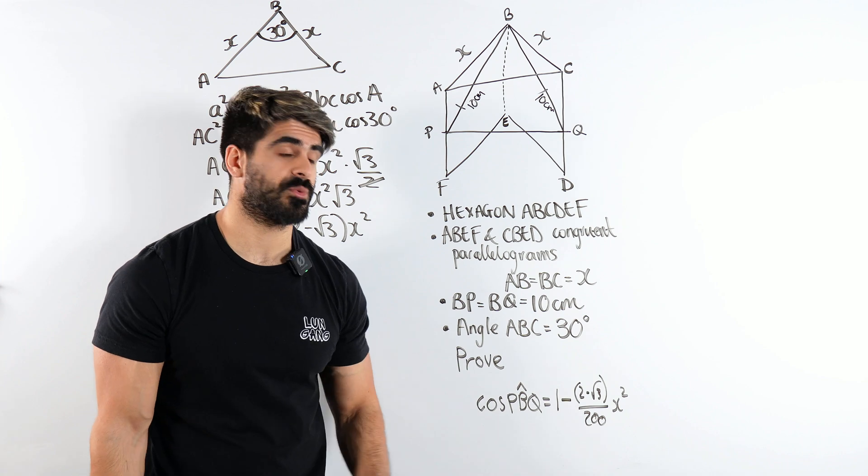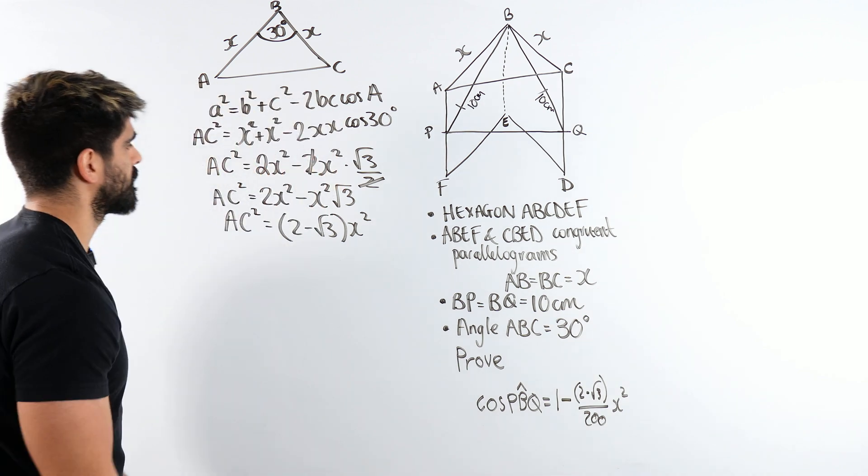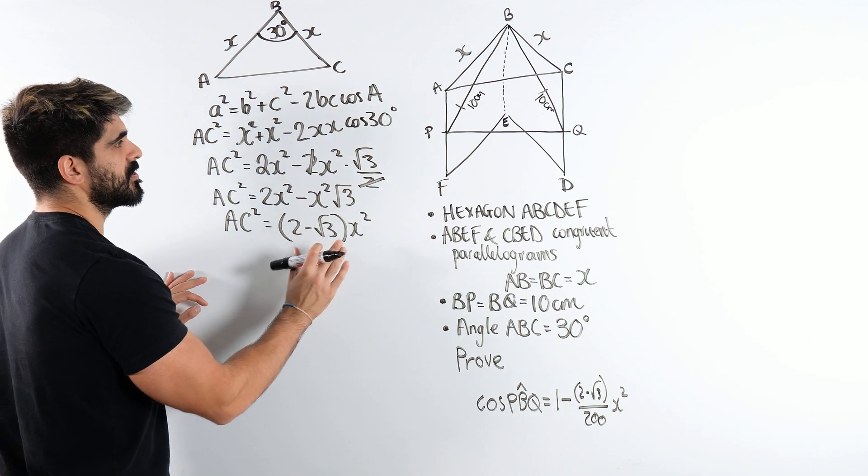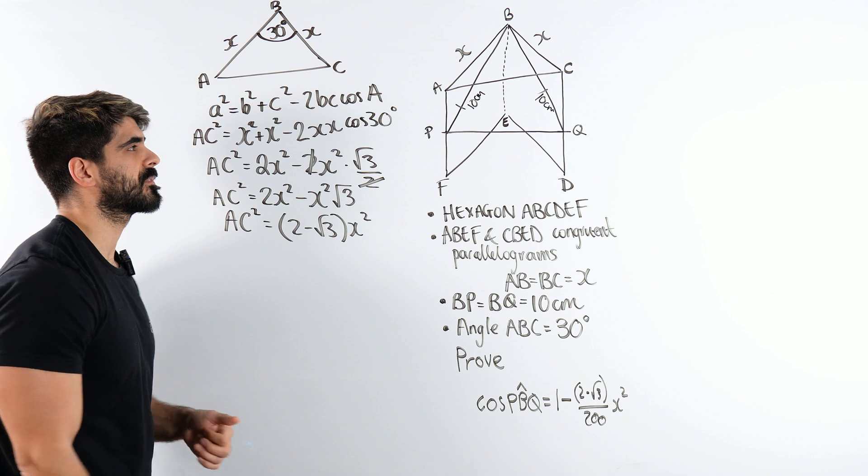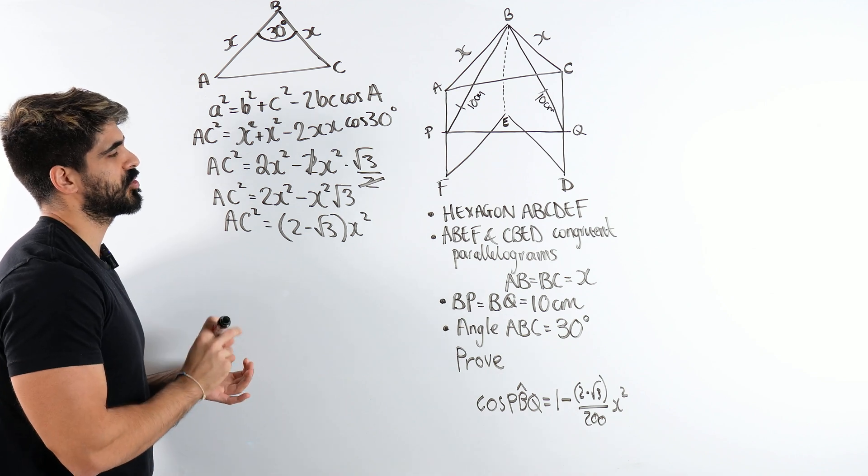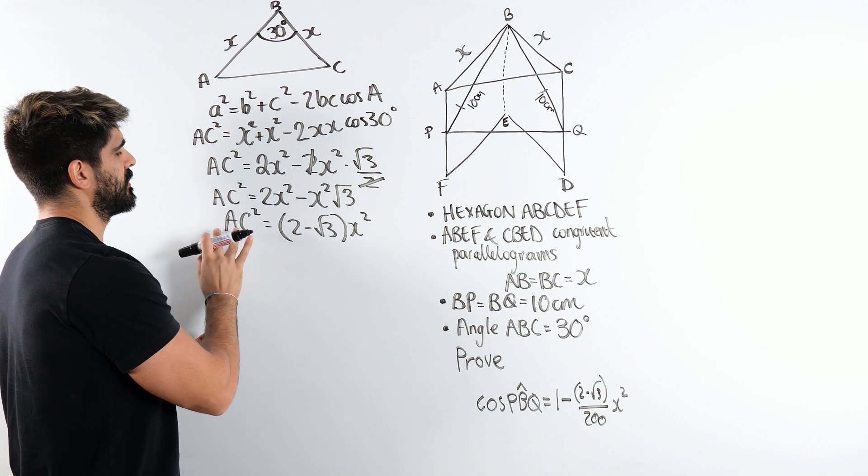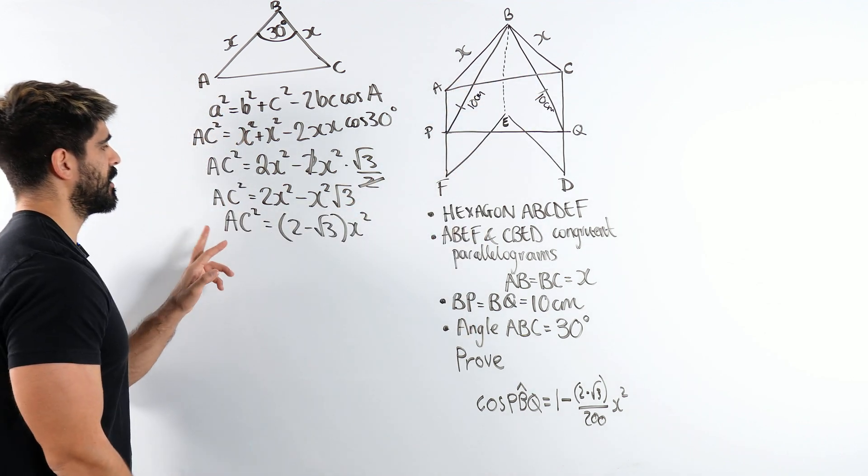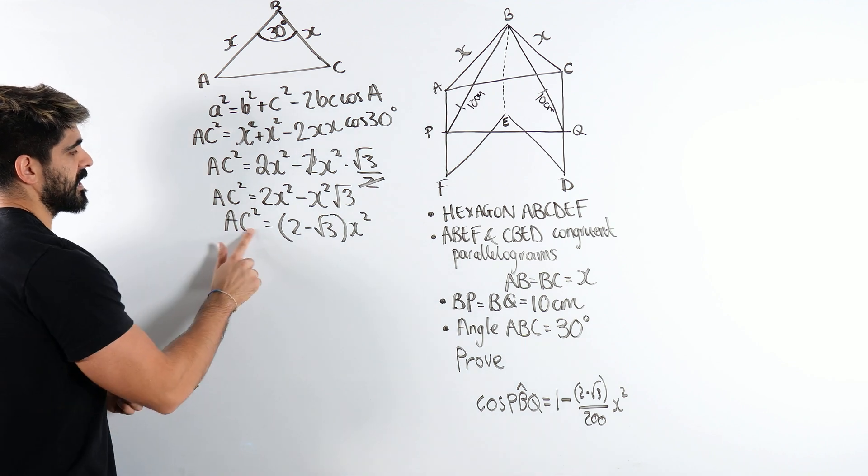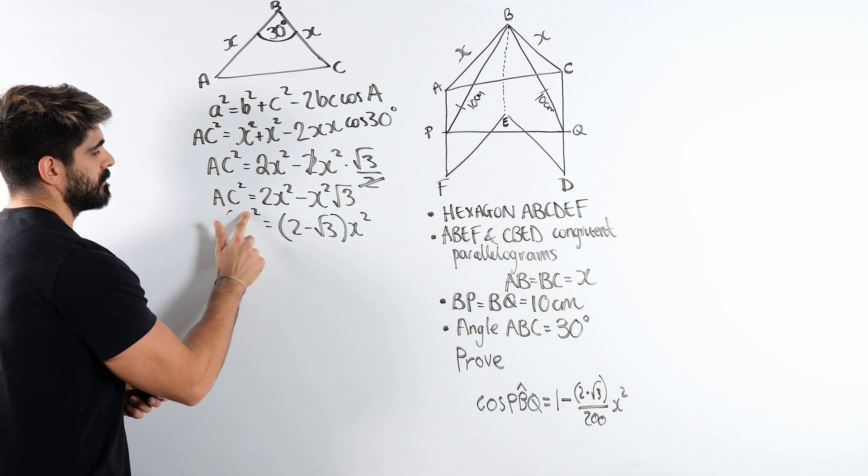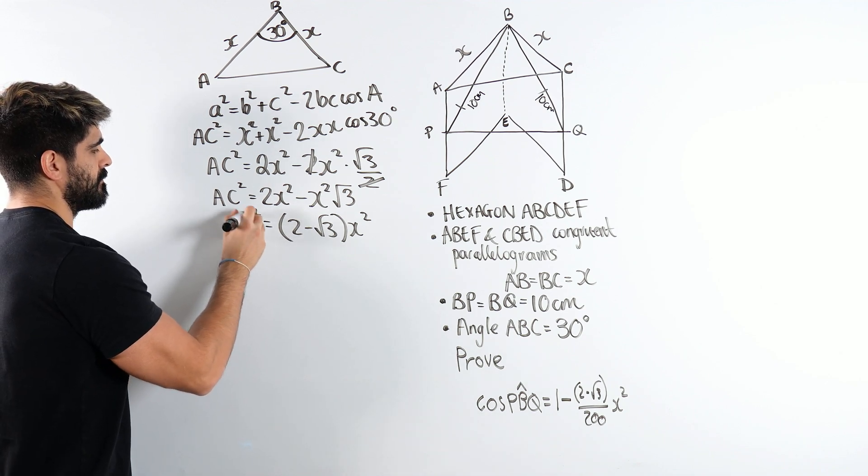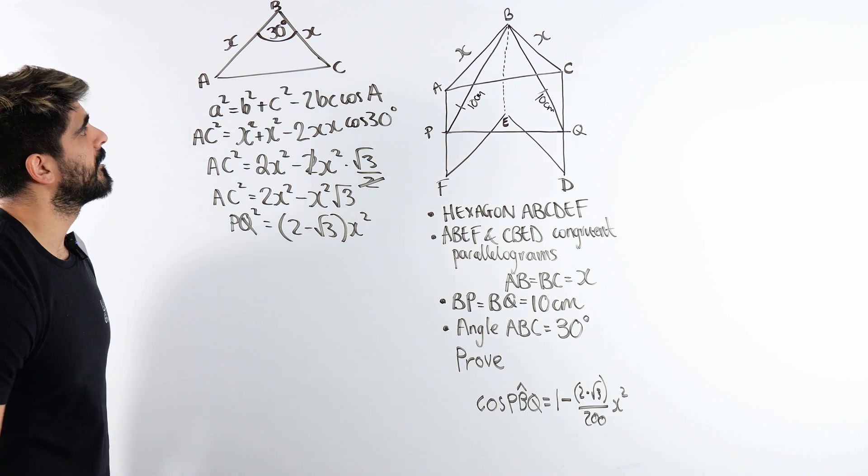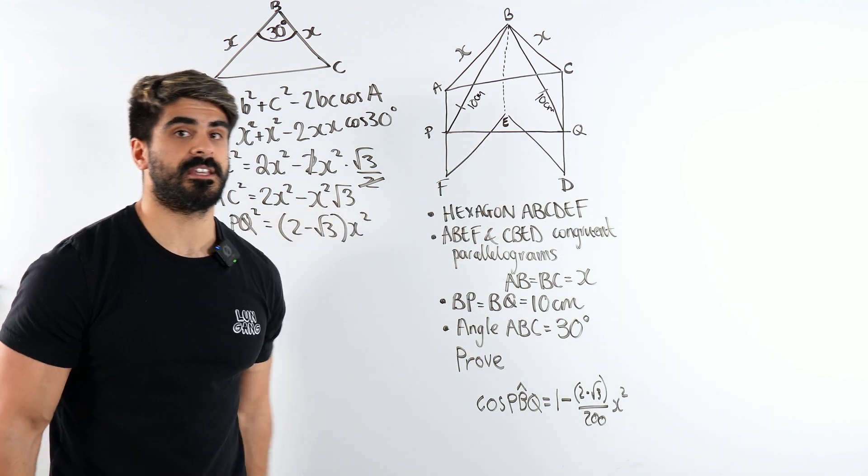So I'm not going to root it just because remember with this triangle, we're going to be using the cosine rule again. So I'm not actually going to root that because this AC is the same as PQ. So instead of saying it's AC, I can now say it's PQ. Now let's look at the other triangle.